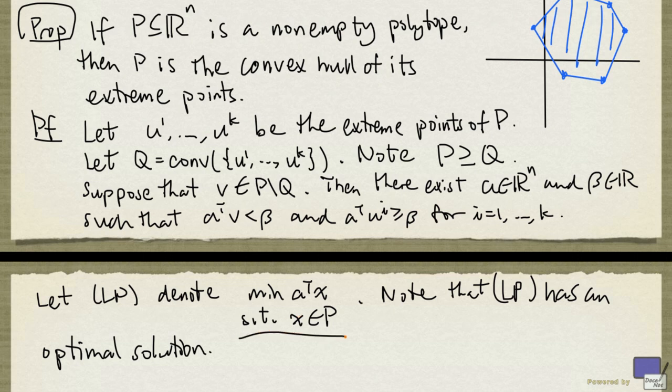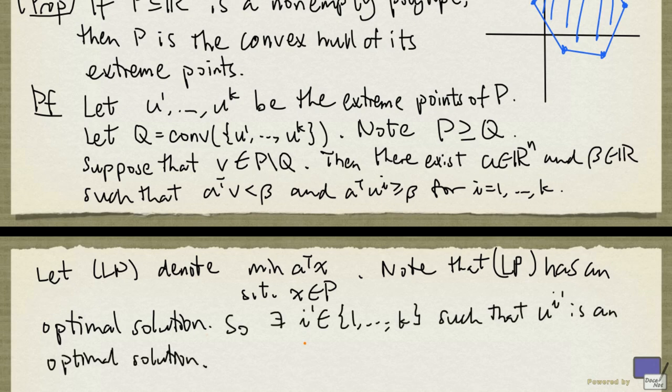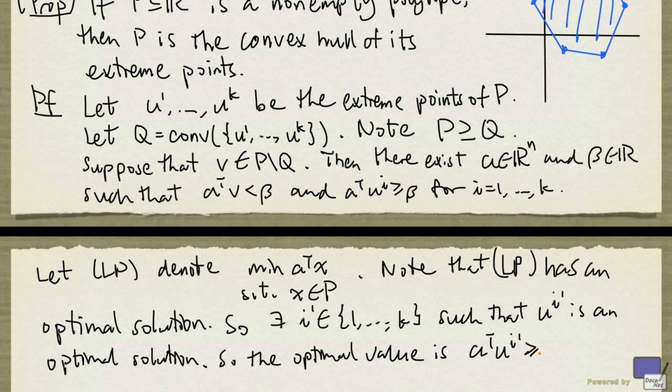But we have seen that if a linear programming problem whose feasible region is pointed has an optimal solution, then it must have an optimal solution that is an extreme point of the feasible region. So there exists i' from the set 1 up to k such that ui' is an optimal solution. So the optimal value of LP is a transpose ui', and it's going to be at least β from what we have up here.